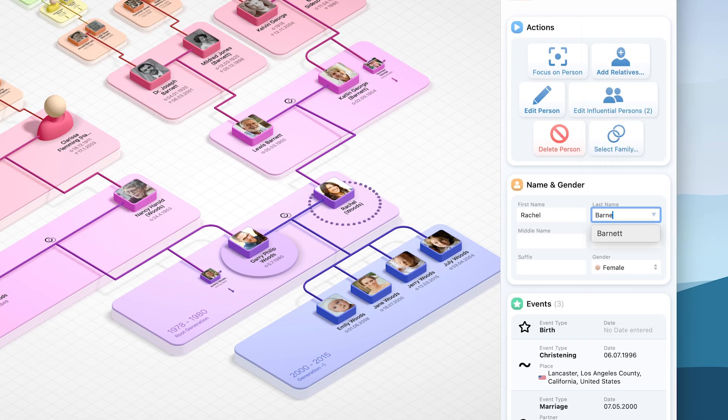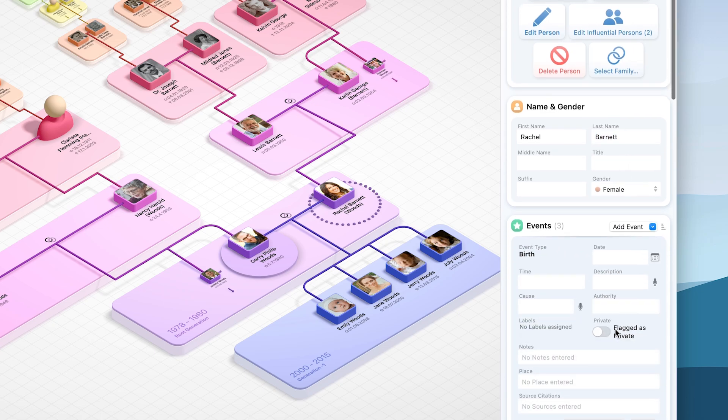Simply click on a person to select them and start editing in the sidebar. Enter a name, gender, facts and events.